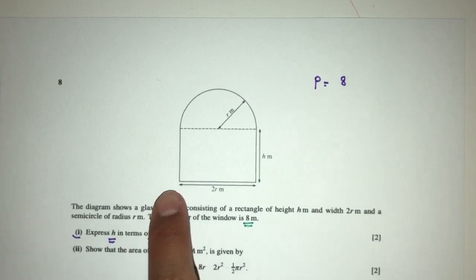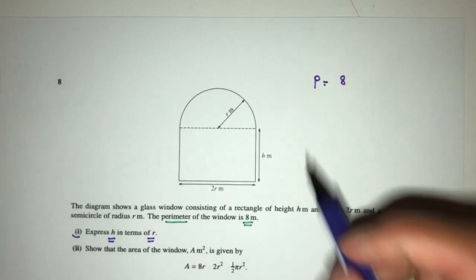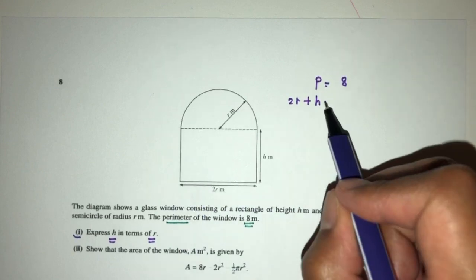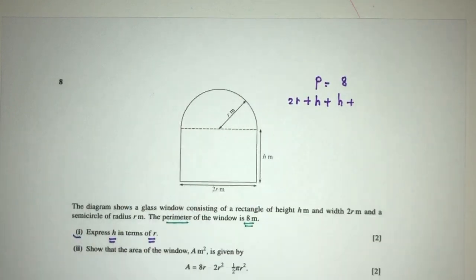Let's see how can we find this. We can have 2r plus h plus h over here, and plus this length of this semicircle.